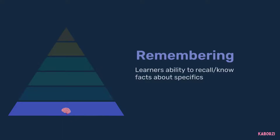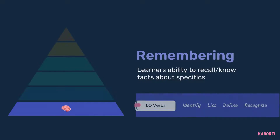Remembering — this refers to a learner's ability to recall and know facts about specifics. Remembering acts as the foundation for all higher-level thinking. To create learning objectives around remembering, you can use verbs like identify, list, define, and recognize.